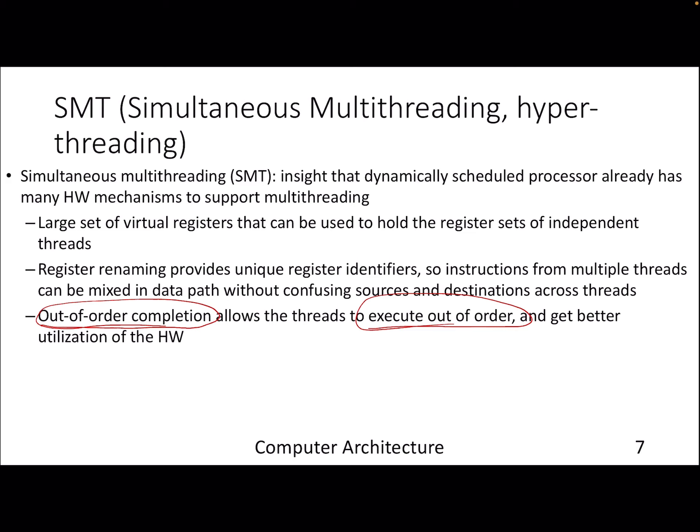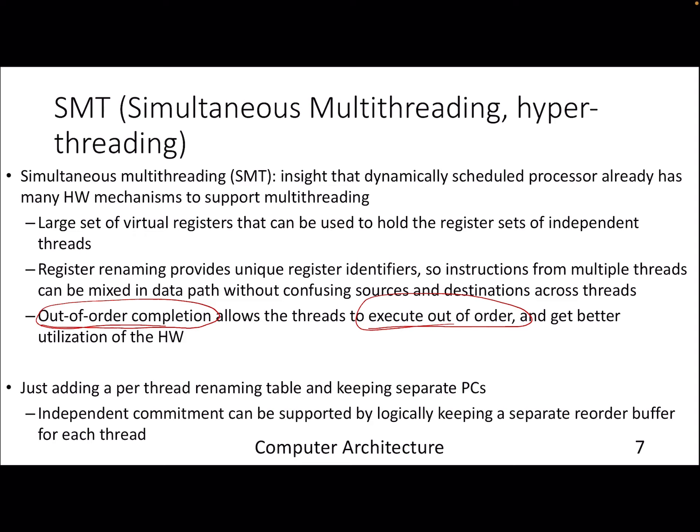Multiple threads are actually in action, and there are circuitries and logic that allow this particular idea. You can have duplicate functional units or duplicate resources — for example, for register renaming you can have a per-thread renaming table, and you can also have a per-thread reorder buffer. In this way, multiple threads can go concurrently into the processor pipeline, and since they are dealing with isolated resources, the only concern is that the execution unit should be free.